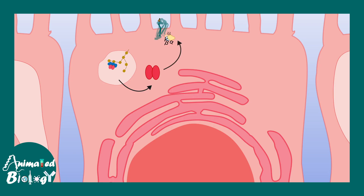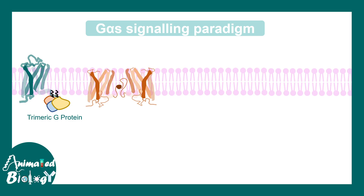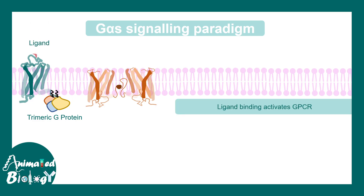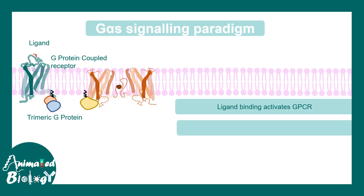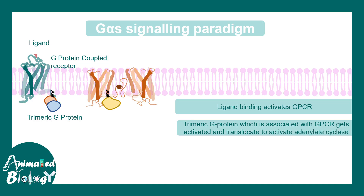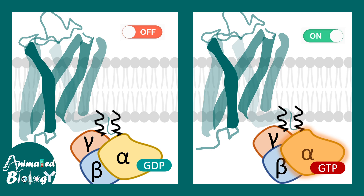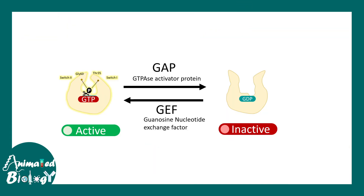G protein-coupled receptors (GPCRs) are specific receptors which, upon ligand binding, activate a trimeric G protein. The G-alpha subunit gets activated and the GTP-bound subunit further activates adenylate cyclase, which produces cyclic AMP. In the off configuration it is bound to GDP, and in the active configuration it is bound to GTP. GTPase activity chops off the extra phosphate group converting GTP to GDP, while guanosine nucleotide exchange factor does the reverse and reactivates the protein.